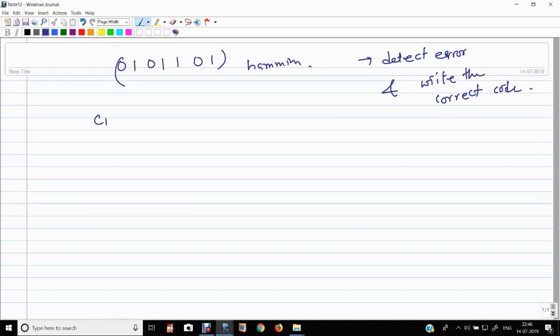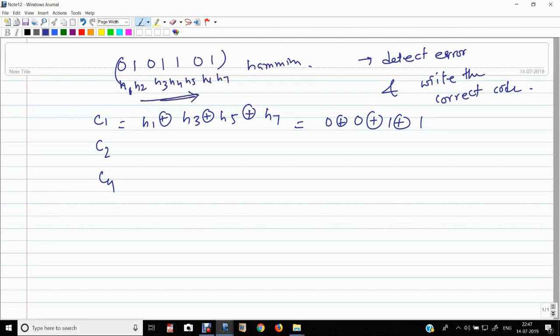For this, we need to find C1, C2, and C4. As we have seen the formulas. H1, H3, H5, H7, 0, 0, 0, 1, 1. This is 0. H1, H2, H3, H4, H5, H6. The sequence will be H1, H2, H3, H4, H5, H6, H7, like this. This is the correct sequence.